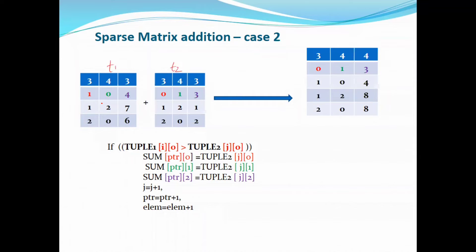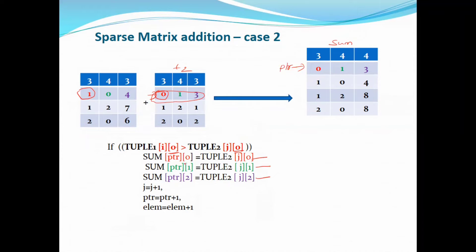This is tuple matrix 1 and this is tuple matrix 2. Here the row number is greater and here it is lesser. For the lesser case, this is the sum of the tuple matrix, so this one needs to be copied. Since tuple 1's row number is greater compared to tuple 2's row number, tuple 2's row number will also be incremented. So in the last step, the nonzero elements in the row number — that is not necessary.